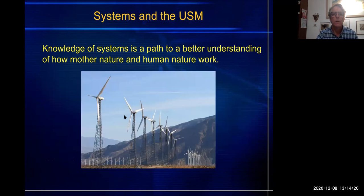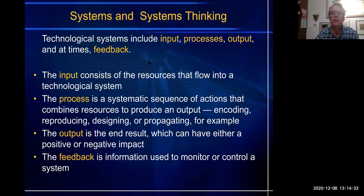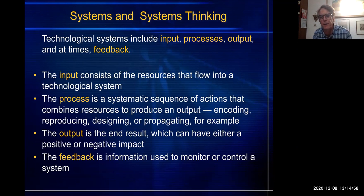Knowledge of systems is a path to better understanding of how mother nature and human nature work. Technological systems include input, processes, output, and at times feedback, depending on if it's a closed or open loop. The input consists of the resources that flow into a technological system. The process is a systematic sequence of actions that combine resources to produce an output. The output is the end result, which can have either a positive or negative impact.